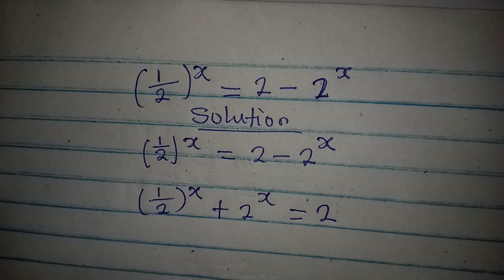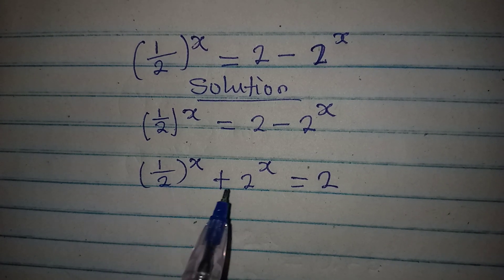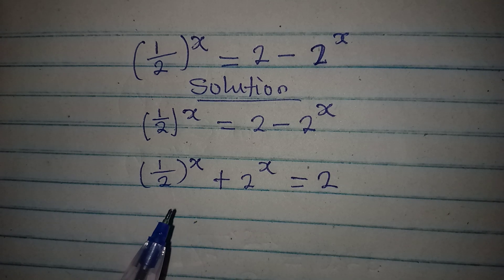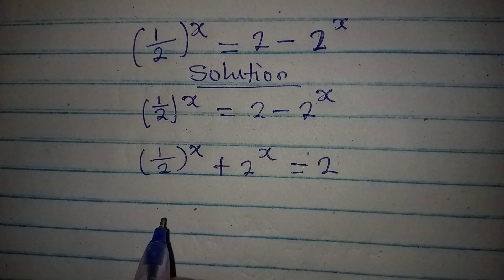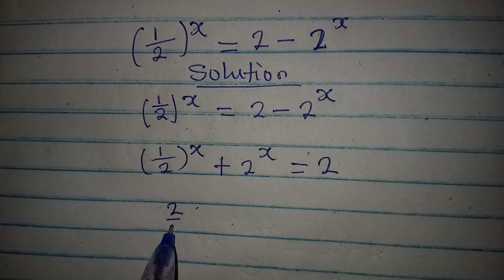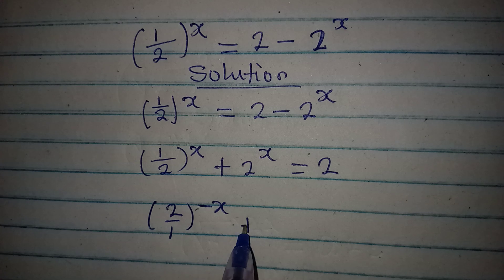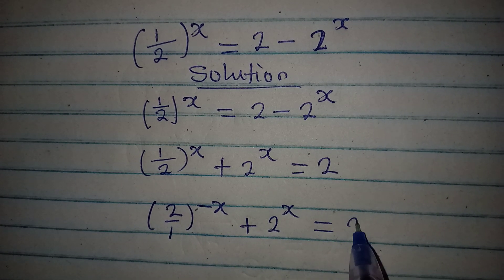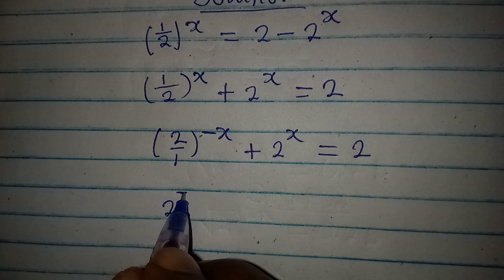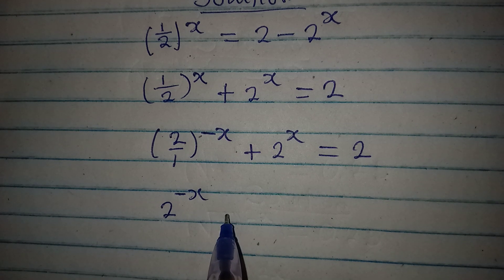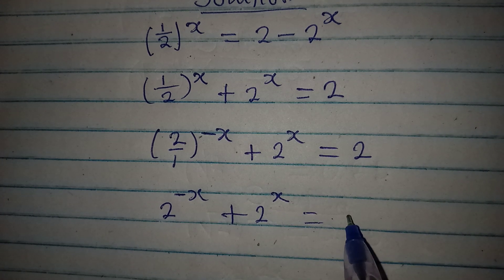Looking at this, we can express 1 over 2 to the power of x differently. If we flip it, we get 2 over 1 but the power turns to a negative power, so we have 2 to the power of negative x. Then plus 2 to the power of x equals 2, since 2 over 1 is simply 2.